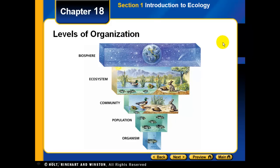Here is a pictorial demonstration of the levels of organization. The biosphere is the most inclusive and largest. Within it there are ecosystems, within ecosystems there are communities, within communities there are populations, and within populations there are individual organisms — the most simple level.